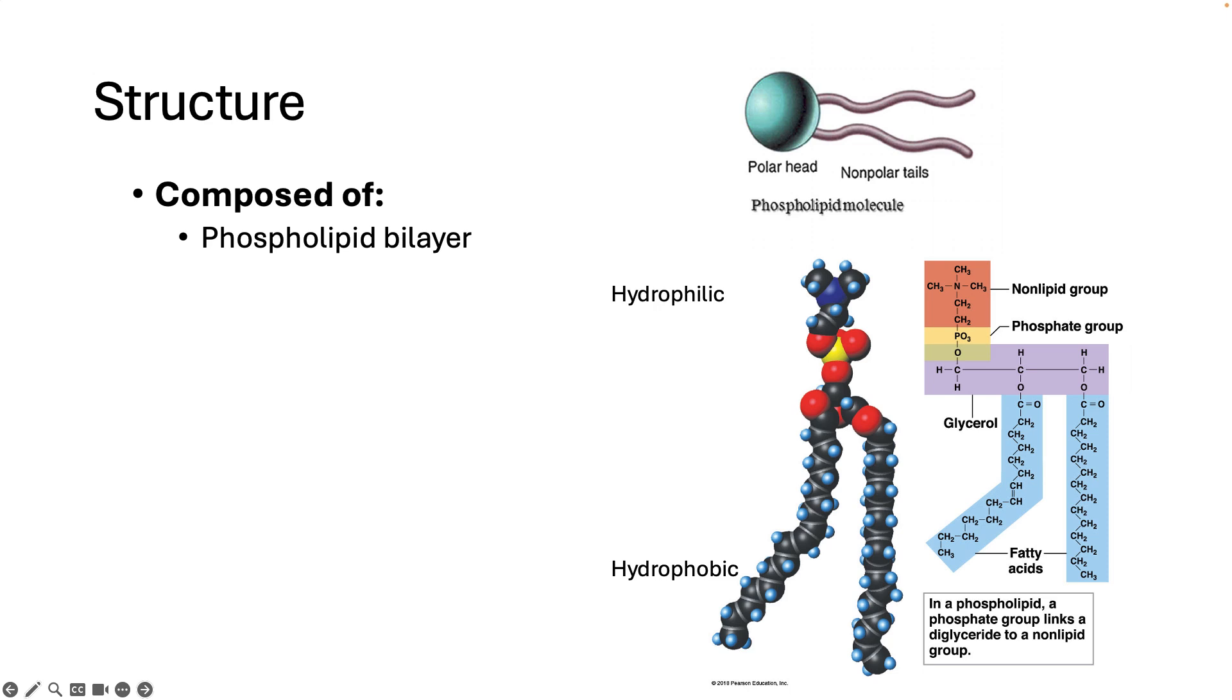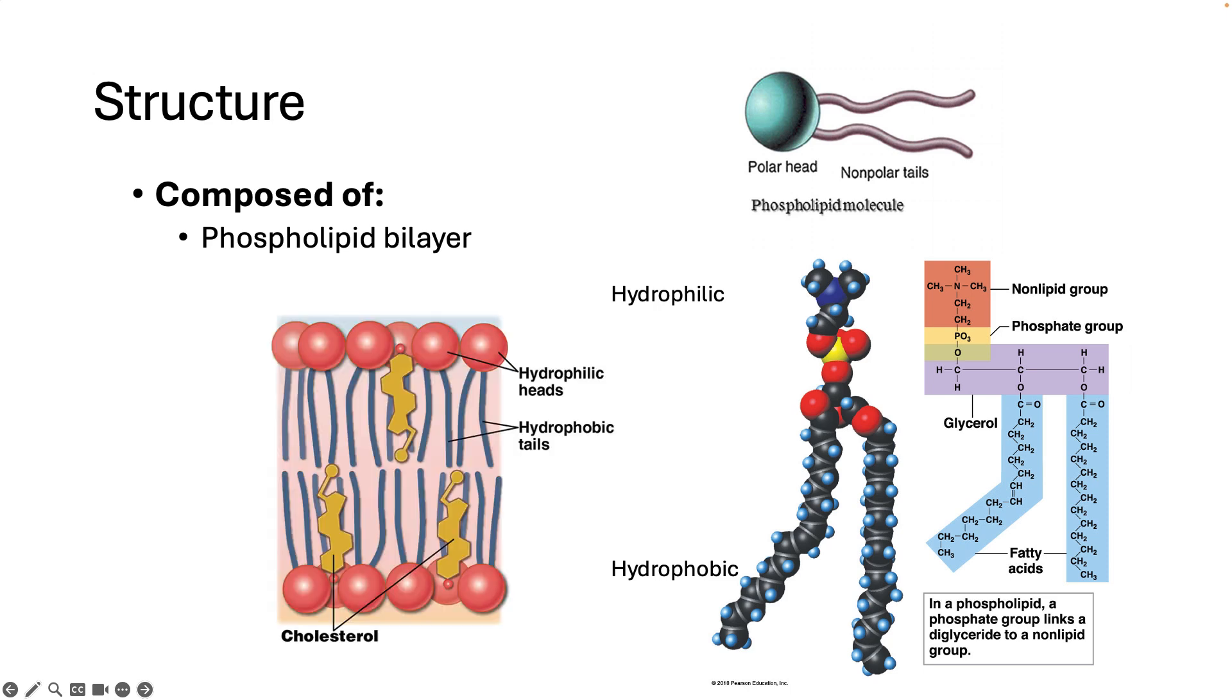Because of this structure, in a watery environment like the body, the phospholipids will form a bilayer. Two layers of phospholipids with the hydrophilic heads interacting with the water and the hydrophobic tails tucked away in the core inside the bilayer. This results in a flexible and self-sealing membrane.